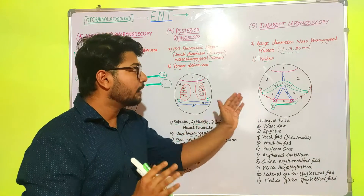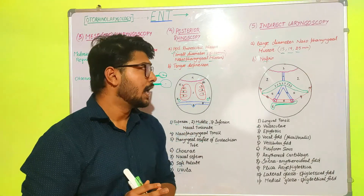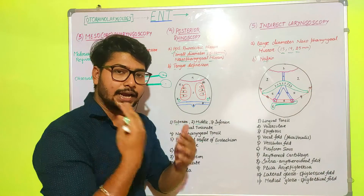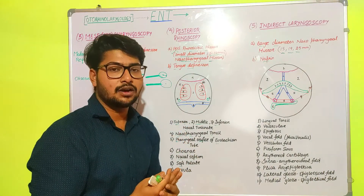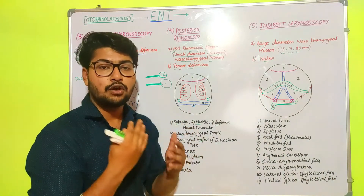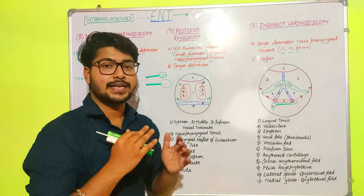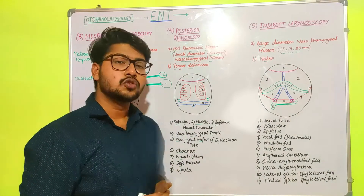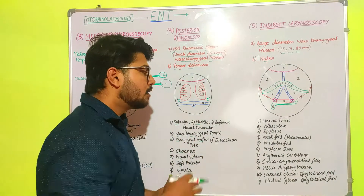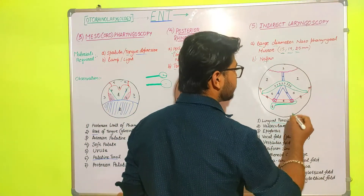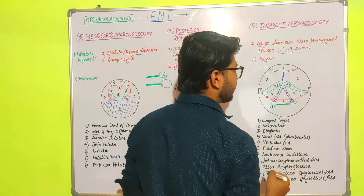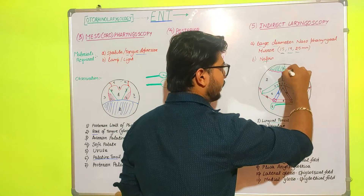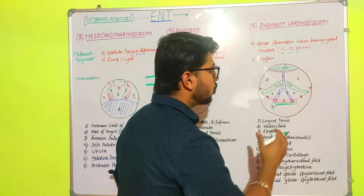Indirect laryngoscopy means examination of the laryngopharynx without surgical means. If we examine the laryngopharynx after surgery, that is called direct laryngoscopy. In the observations of indirect laryngoscopy: number one represents the lingual tonsil, which is present behind the root of the tongue.